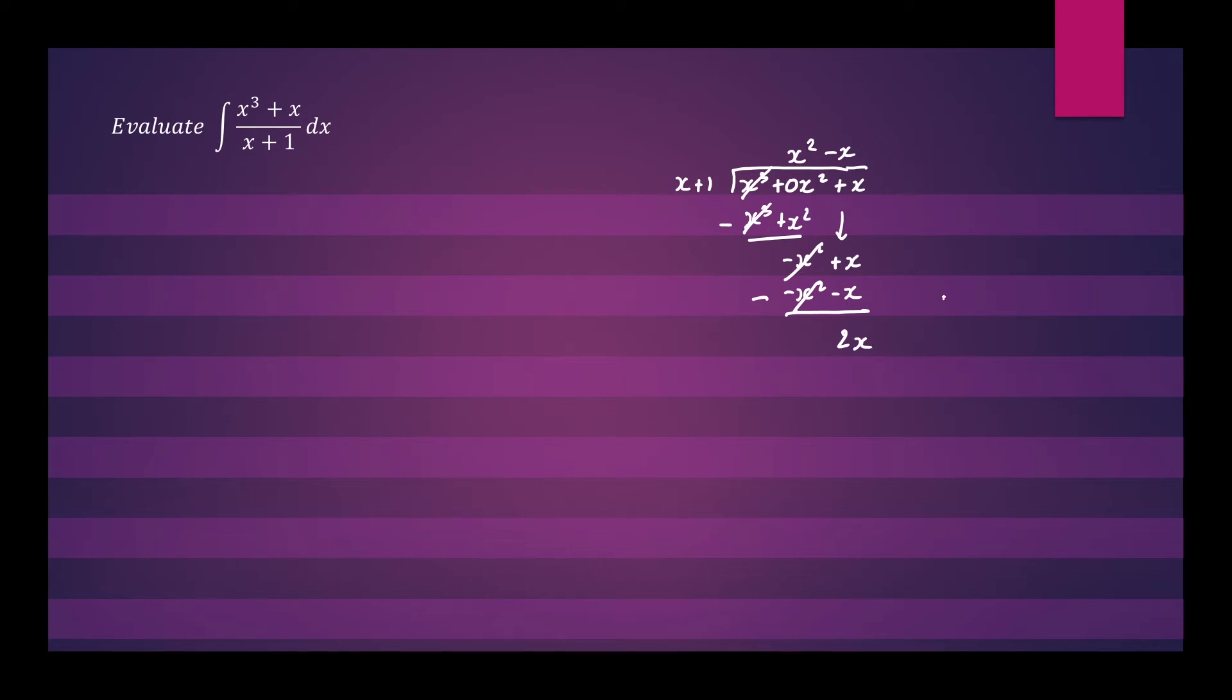So we can rewrite this as x squared minus x plus 2x, the remainder over the divisor, which is x plus 1. Let's rewrite that over here. We have the integral of x squared minus x plus 2x over x plus 1 dx.